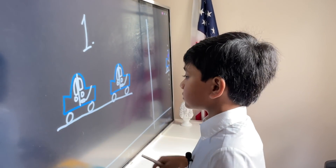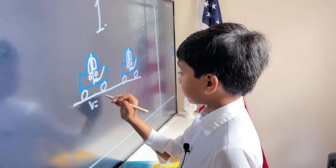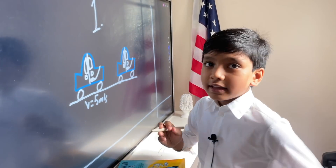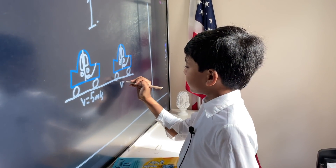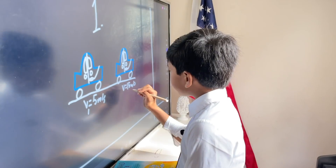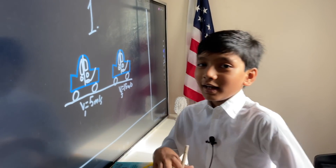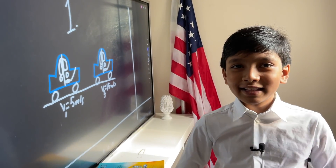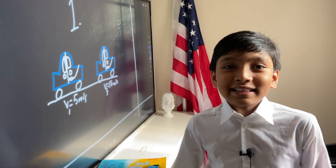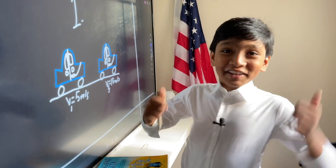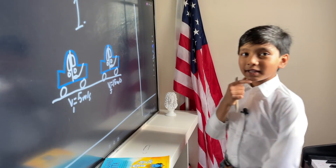First scenario: let's say we have a car that's currently traveling at 5 meters per second. But it suddenly speeds up to 15 meters per second. So it starts at 5 meters per second but goes up to 15 meters per second. That means that it's increased by 10.